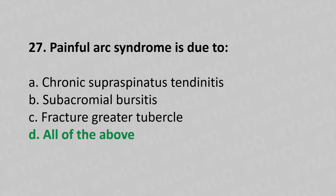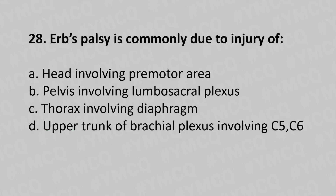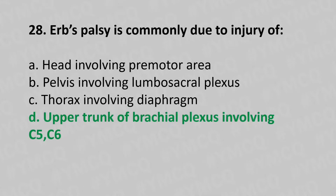Moving to our 28th question: Erb's palsy is commonly due to the injury of option A head involving premotor area, option B pelvis involving lumbosacral plexus, option C thoracic involving diaphragm, option D upper trunk of the brachial plexus involving C5 C6. The answer is option D upper trunk of the brachial plexus involving C5 C6.